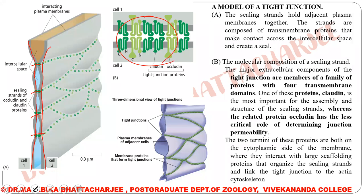There is a dark green shaded protein and a light green shaded protein — those are the molecular composition of the tight junctions. The major extracellular components of the tight junctions are members of a family of proteins with four transmembrane domains. One of these proteins is claudin and the other is occludin. Both proteins are polypeptides, and all these polypeptides have both the N-terminal and the C-terminal on the cytoplasmic side.